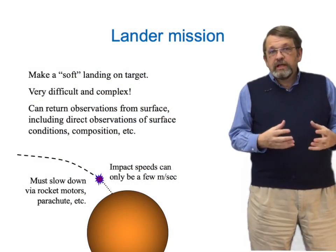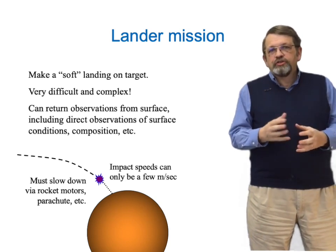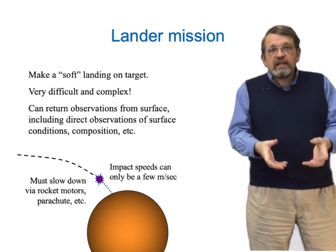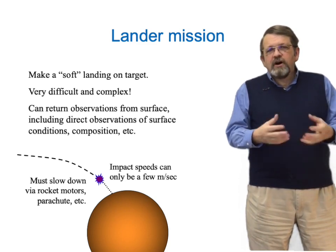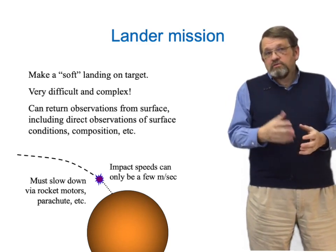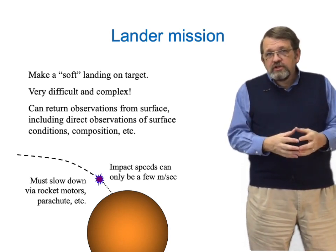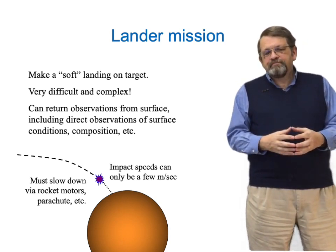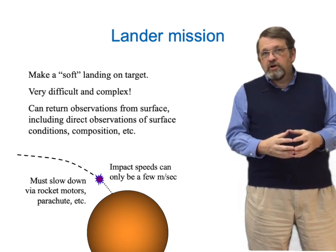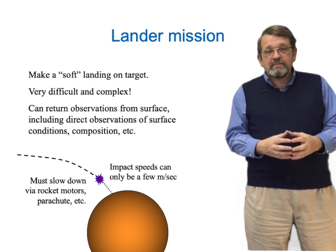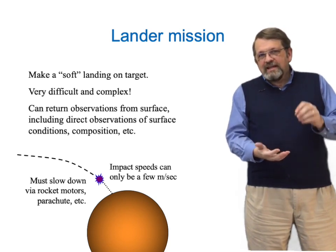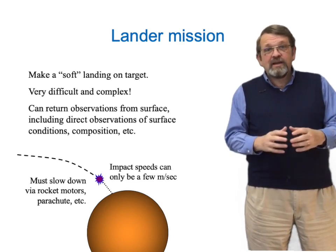Even more difficult than an orbiting mission is a landing mission — a lander on the surface of another world. The idea is to take a machine, a robot, and put it softly enough on the ground that it can still function. This is far more difficult and far more complex, but it has a very big payoff — it allows us to get, through our robots, direct observations of surface conditions, composition, and so on. The trick is you have to slow down before you reach the surface by some combination of rocket motors and perhaps parachutes if your planet has an atmosphere. You have to achieve landing speeds of only a few meters per second — zero altitude at zero speed to a very high precision.